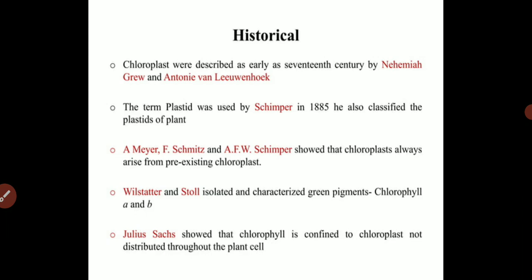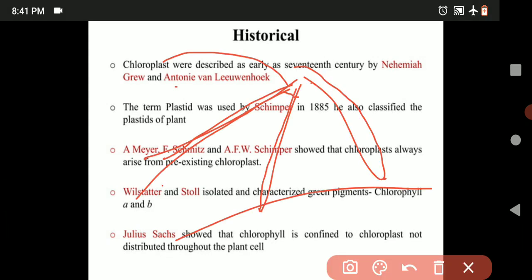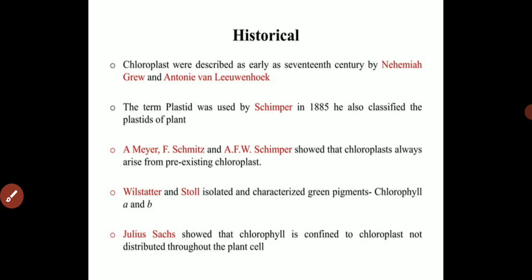This slide talks about the historical events of chloroplast discovery. Chloroplast was first discovered in the 17th century by Nehemiah Grew and Anton van Leeuwenhoek. The term plastid was used by Schimper in 1885, who also classified plastids of plants. Meyer, Schimper, and Skins showed that chloroplasts always arise from pre-existing chloroplasts — similar to bacteria dividing by fission — one cell divides into two.